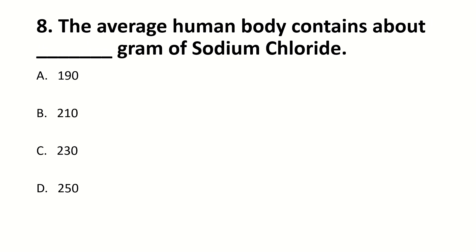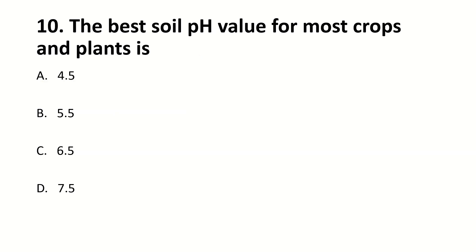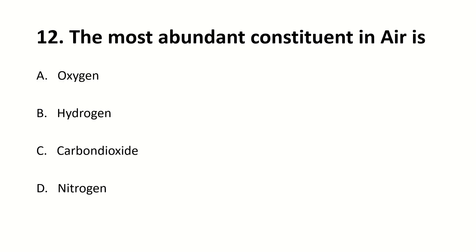The substance which increases the rate of a chemical reaction is dash. Right answer is B — catalyst. The average human body contains dash grams of sodium chloride. Right answer is D — 250 grams. pH is an abbreviation for dash. Right answer is A — power of hydrogen. The best soil pH value for most crops and plants is dash. Right answer is C — 6.5. The most eminent constituent in the air is dash. Right answer is D — nitrogen.